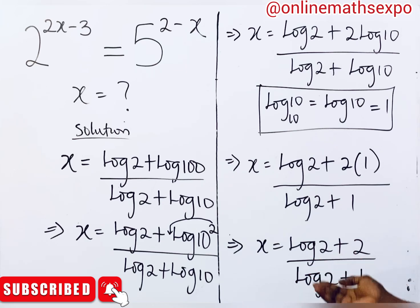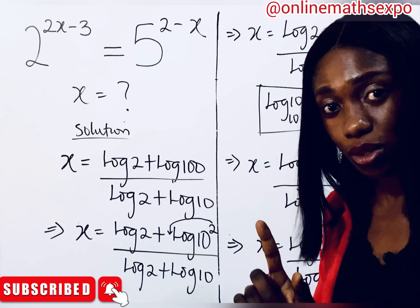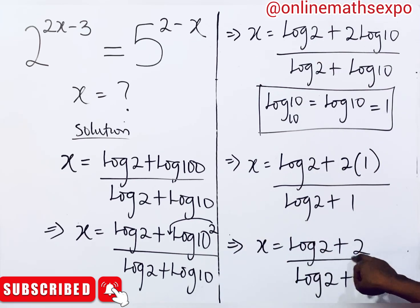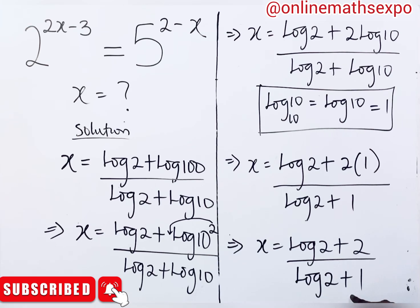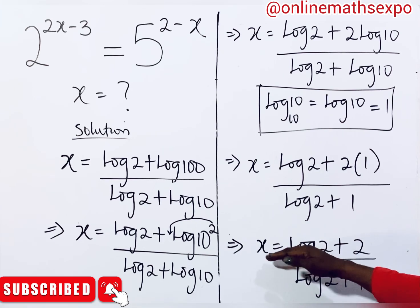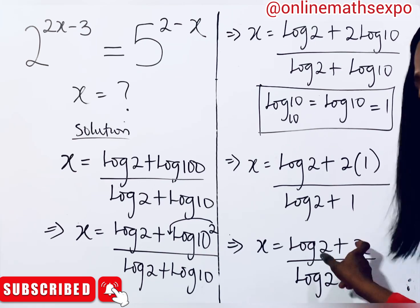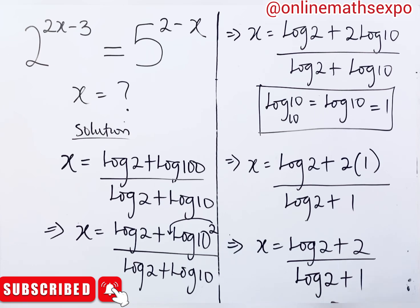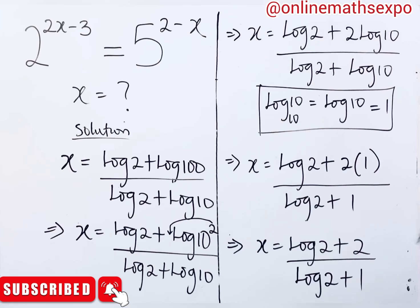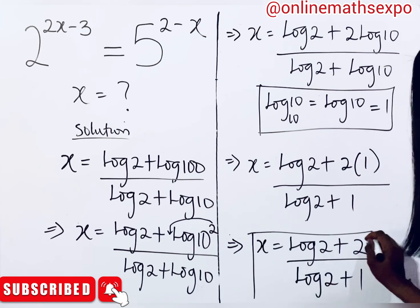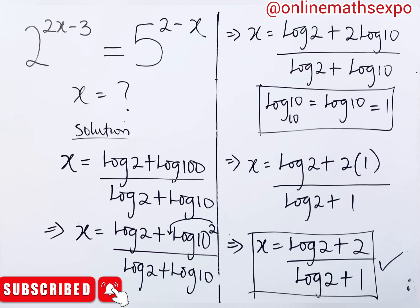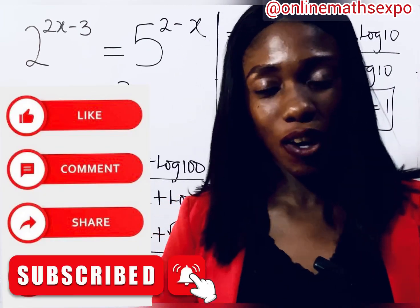At this point, most students would cancel out log(2) from the numerator and denominator. Please don't do that! The numerator and denominator each have two terms joined by addition signs. You cannot cancel terms across addition in a fraction. The values are already in simplified form, so x equals (log(2) + 2) / (log(2) + 1) is our final answer.